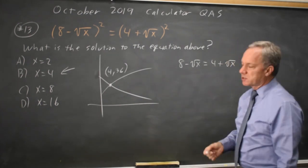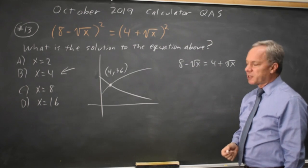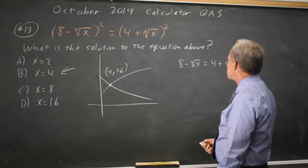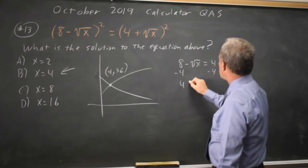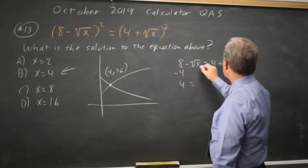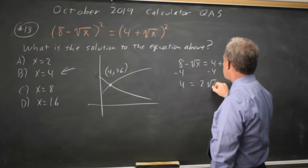but I'm going to try it without the plus or minus first and see if we win. 8 minus 4, so 4 equals root x plus root x, which is 2 root x.